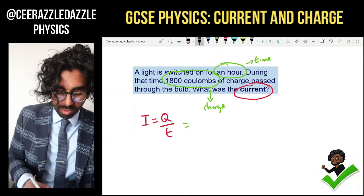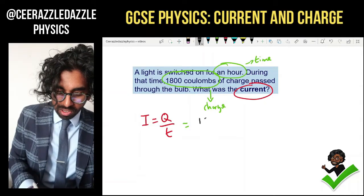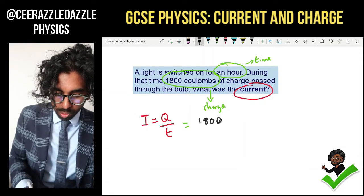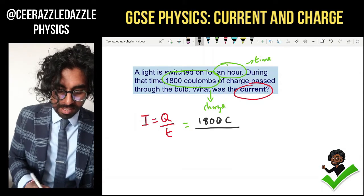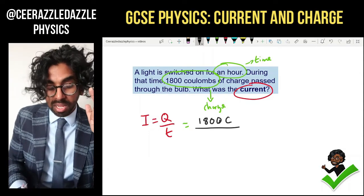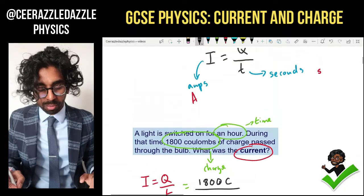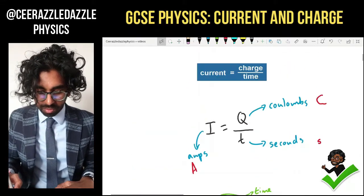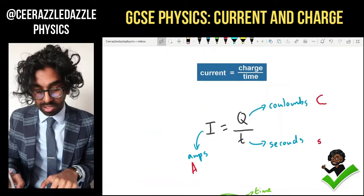Now throwing it into our formula, we know the charge is going to be 1,800 coulombs. The time, but the time is in hours. If you look at the formula, where's it gone? Here we go. The time is going to be in seconds.